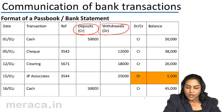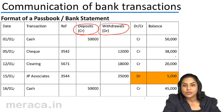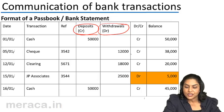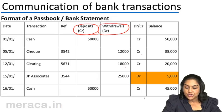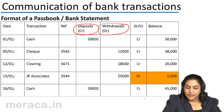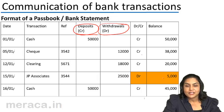Subsequently, there is a withdrawal of 12,000, so that now there is a balance of 38,000 — again a credit balance, a positive balance, a favorable balance. A further withdrawal of 18,000 and we have a balance of 20,000. There is then a check issued for 25,000, as a result of which the balance has become negative at 5,000.